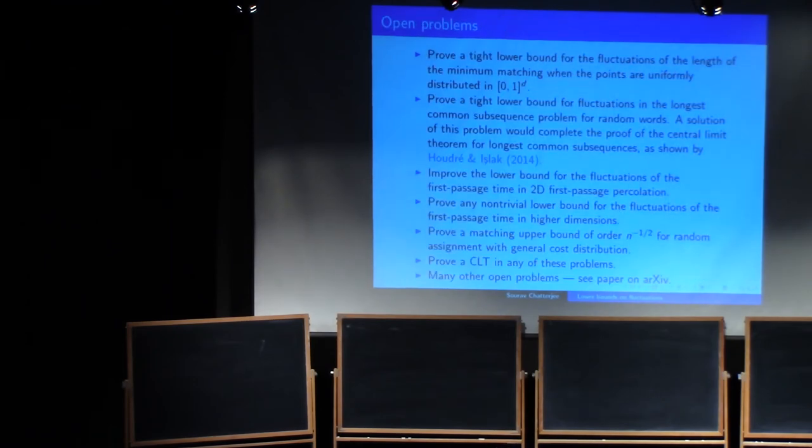So finally, here are some open problems. And there are many more in the paper. So as I said, the minimum matching on a compact set, I think it's still open. It's not clear how to do that. The second one is a very nice problem that I learned from Christian Houdre. So you take the longest common subsequence problem for random words, so you take two random words of length n, where the alphabet is a fixed size, let's say a binary alphabet maybe, or alphabet with four letters, and you choose the letters uniformly from the alphabet, and look at the longest common subsequence, so you choose a subsequence of one and a subsequence of the other, so that they exactly match. And the length of the longest common subsequence, what Houdre and Umit Islak, who is a student of Larry Goldstein, I think, they proved a central limit theorem modulo that a lower bound in the variance. They couldn't get the right lower bound in the variance. So that's an open question.